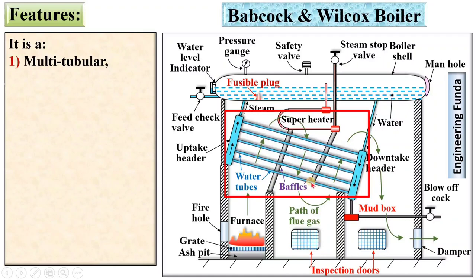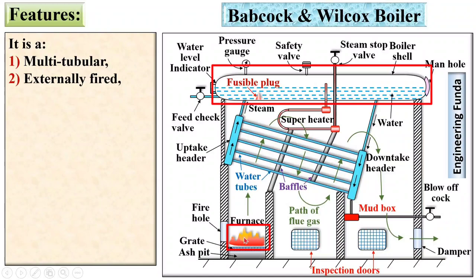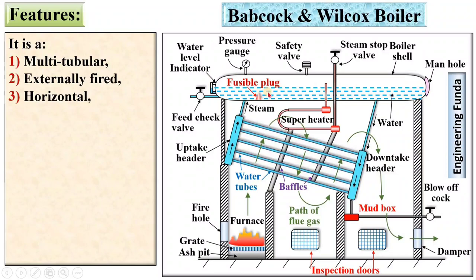It is a multi-tubular boiler — you can see a number of tubes, which is why it is called a multi-tube boiler. It is an externally fired boiler because the furnace is outside of the boiler shell. It is a horizontal boiler because the boiler shell is in horizontal position. Next, it is a high pressure boiler — the steam produced by the Babcock and Wilcox boiler has pressure more than 20 bar.